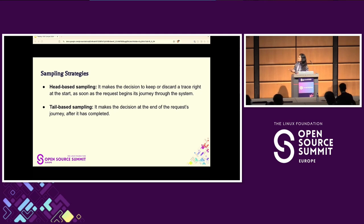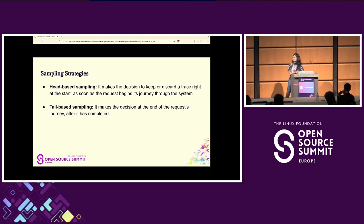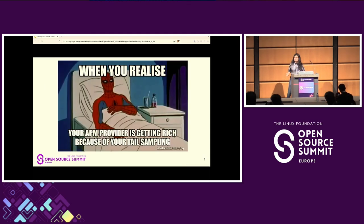Tail-based sampling is much more complex and difficult to implement and manage. From a monetary perspective, a lot of requests produce a lot of trace data that needs to be stored and processed. If you add an external APM provider, you need to send all your trace data to them and they'll charge you for storage and processing. As your company scales and more requests come in, you'll send more and more data, and they'll charge you accordingly. You'll end up paying very hefty bills.